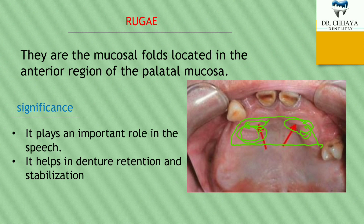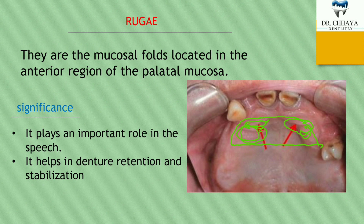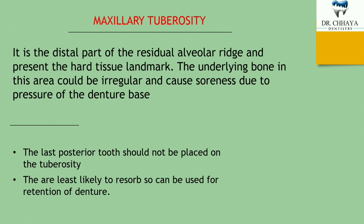Now, what is the significance of rugae? They play an important role in speech. In non-denture-bearing patients, rugae help in speech, while in denture-bearing patients, they help in denture retention and stabilization by preventing the forward movement of the denture.